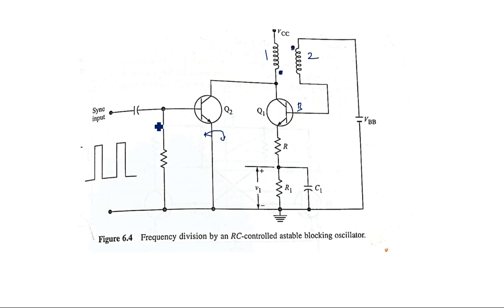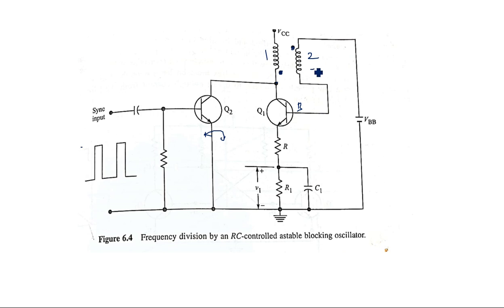Assume that we are giving a positive-going pulse — that makes transistor Q2 turn ON. With Q2 ON, the output reaches the capacitor, which takes the voltage as input. These pulses move to the collector and then to the secondary winding with a 180-degree phase shift, so a positive peak pulse appears and is applied to the base, keeping Q1 in the ON state.